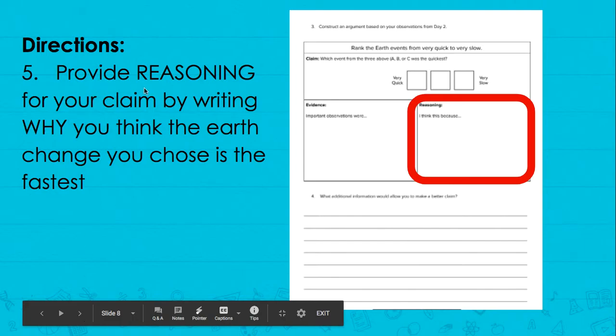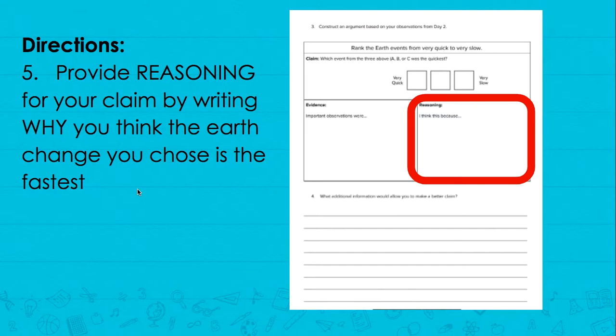Next you're going to provide reasoning for your claim by writing why you think the earth change you chose is the fastest. We always have to make sure that we are providing reasons for our opinions. Just like in math, we're doing it in reading too.